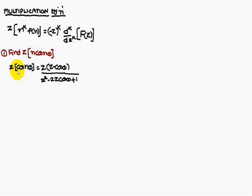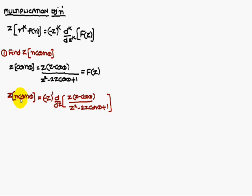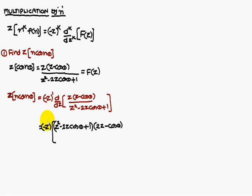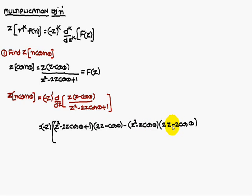Therefore, the Z-transform of n·cos(nθ) is minus Z, whole power 1 (since n power 1 is there), times one differentiation of F(z). So: minus Z into [denominator (Z² − 2Z·cosθ + 1) times differentiation of numerator (2Z − cosθ) minus numerator (Z² − Z·cosθ) times differentiation of denominator (2Z − 2cosθ)] divided by denominator whole squared.